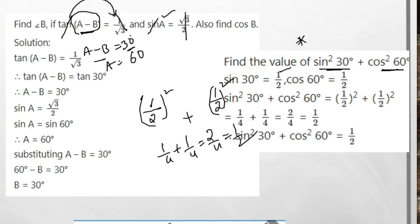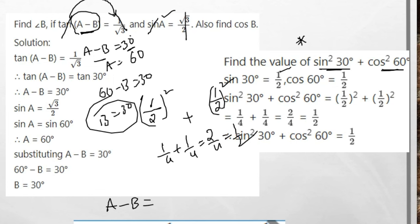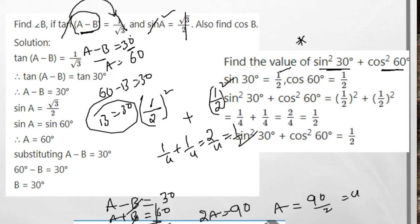If you are afraid of the standard angles table, here is an example using tan and complementary angles. If tan(A − B) = 1/√3, then tan of 30° = 1/√3, so A − B = 30°. If sin A = √3/2, then A = 60° because sin 60° = √3/2. Also, cos(A + B) = 1/2, so A + B = 60°. Solving: A − B = 30° and A + B = 60°, so 2A = 90°, giving A = 45° and B = 15°.